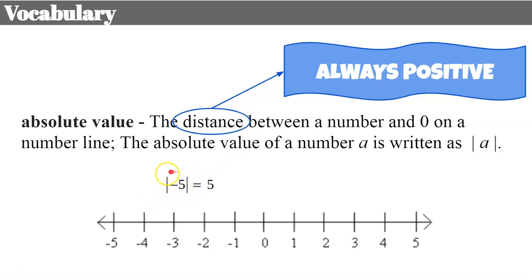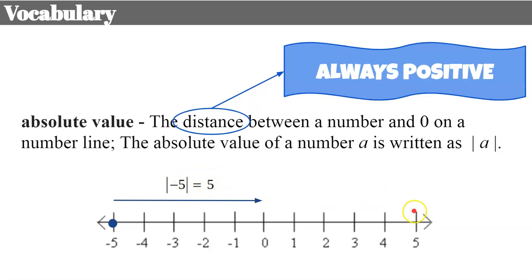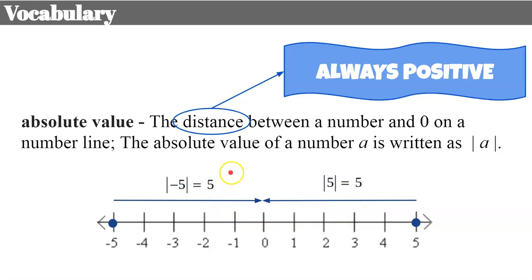Let's look at the absolute value of negative 5. That is equal to positive 5, and here's why. If I graph negative 5 on this number line, the distance it is from 0 is 5 — it's 5 units away. If I graph positive 5, it is also 5 units away from 0. It doesn't matter if you're on the left or the right; the distance from 0 is 5. Remember, the absolute value of anything is always a positive amount.